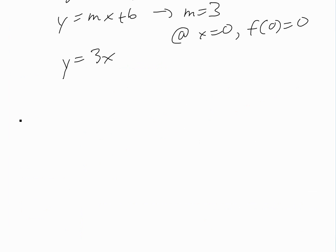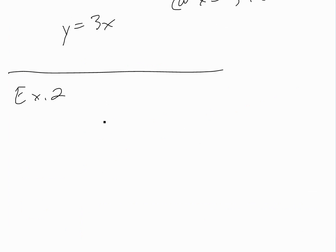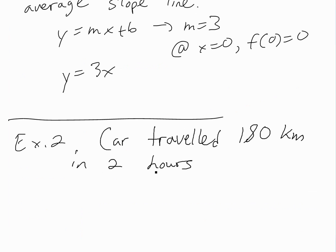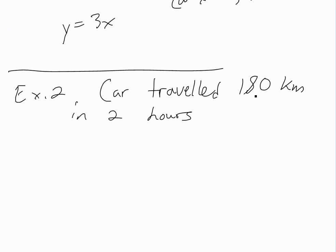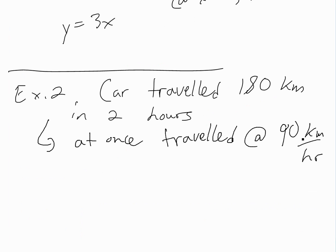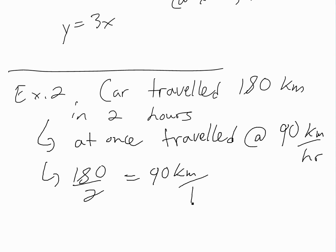Let's do another example — more of an illustration. Say you have a car that traveled 180 kilometers in two hours. All the mean value theorem is saying is that at some point you had to have traveled at 90 kilometers per hour, which is the average speed: 180 divided by two equals 90 kilometers per hour.